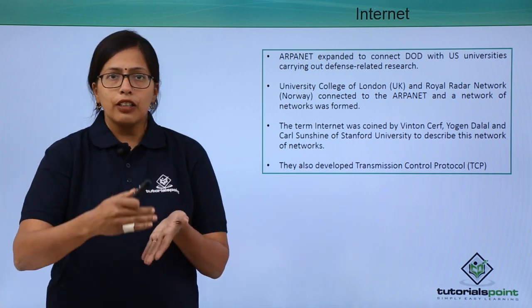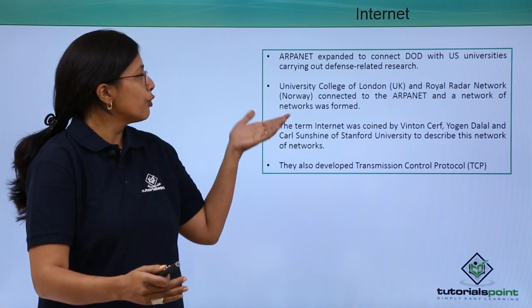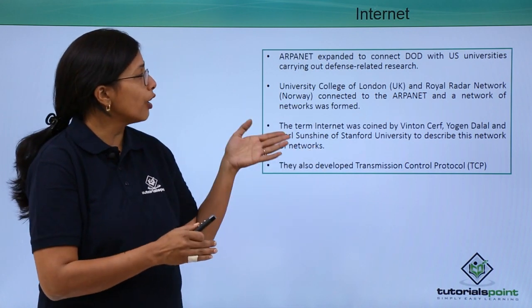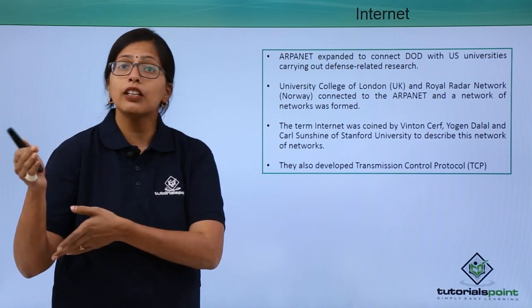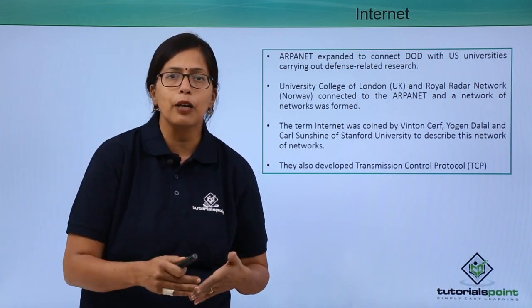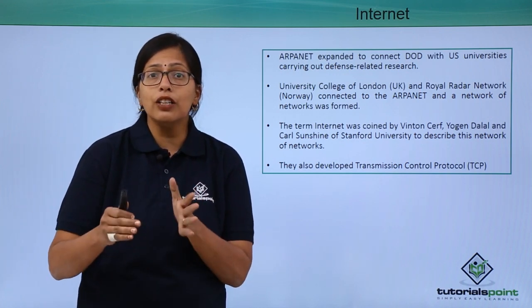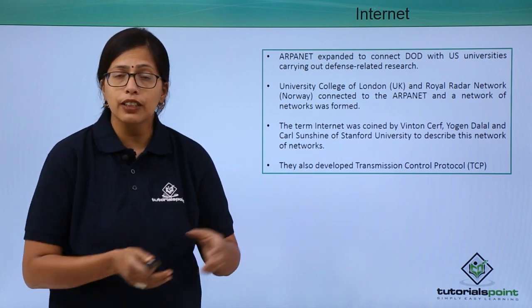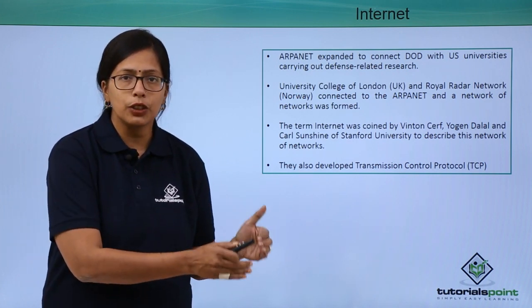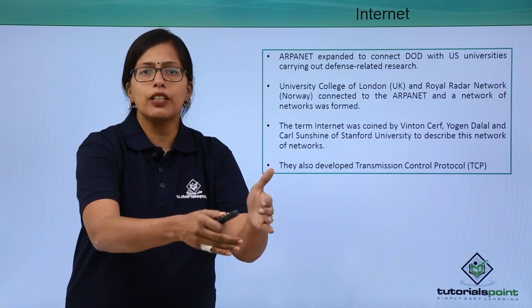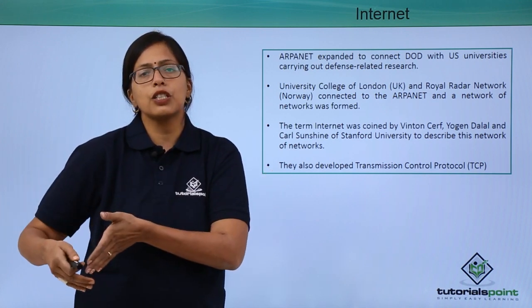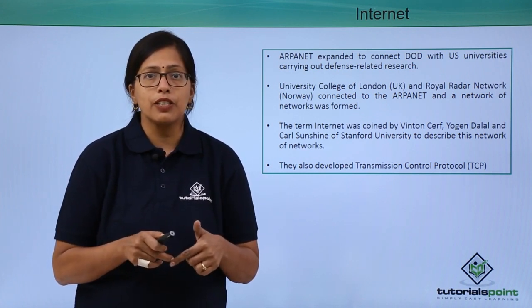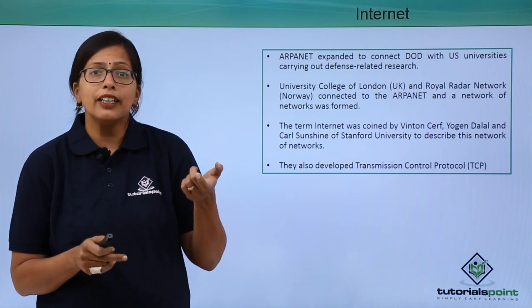After a couple of years, University College of London in the UK and the Royal Radar Network in Norway were connected to the ARPANET. Now it actually became a network of networks — one network in the US, another in the UK, another in Norway — and this network of networks was called the internet.